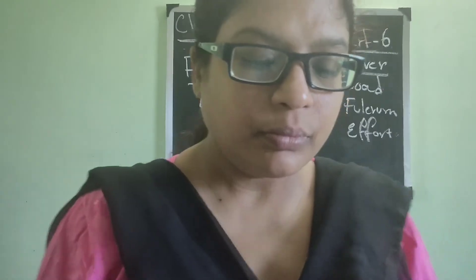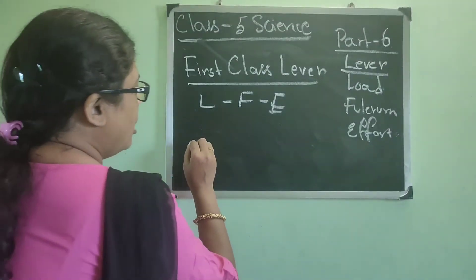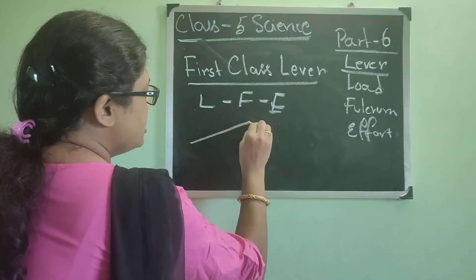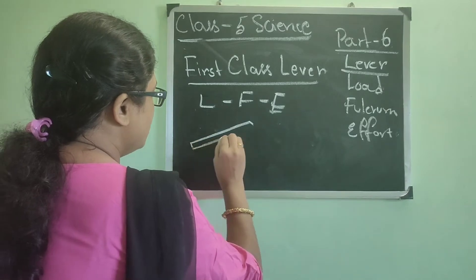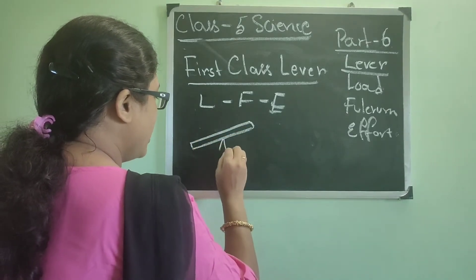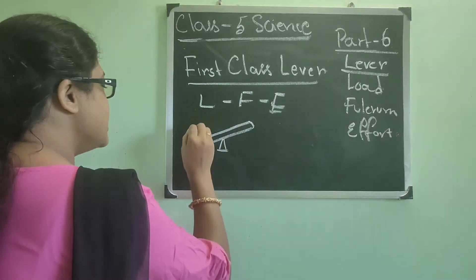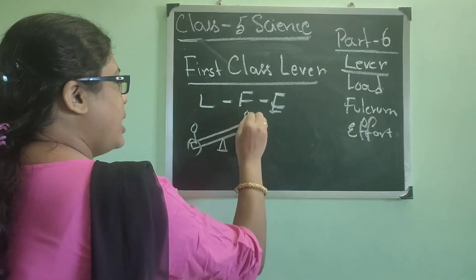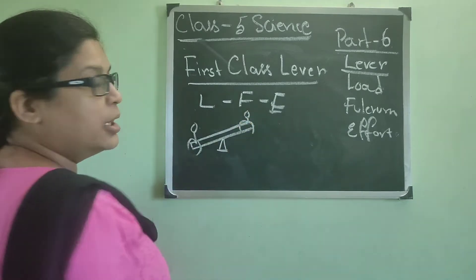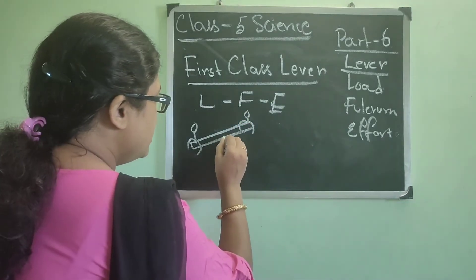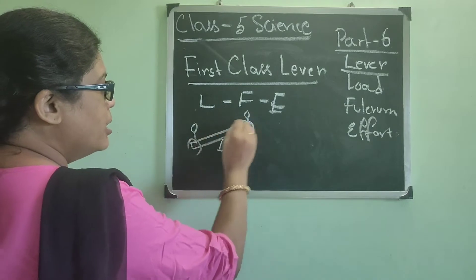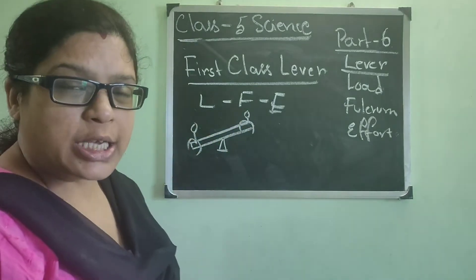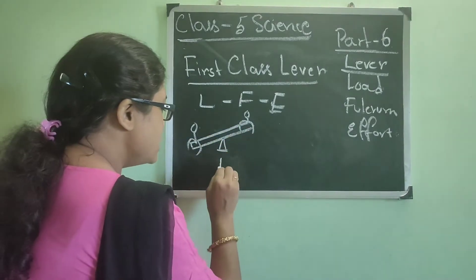Now see, suppose this is a see-saw in your playground. Now if I say that here one boy is sitting and here another girl is sitting. So this is the point where the free rod is balanced. So this is the fulcrum.